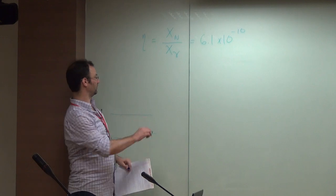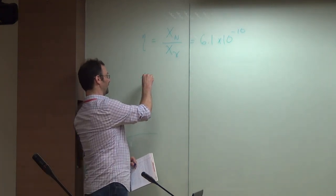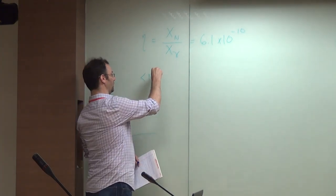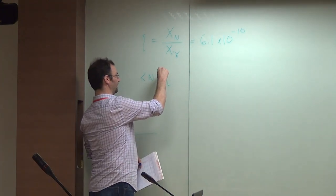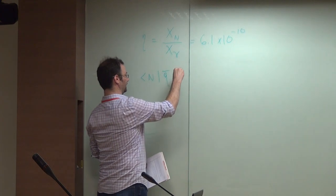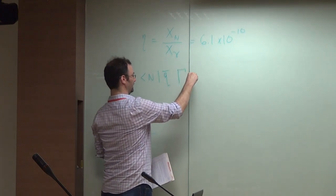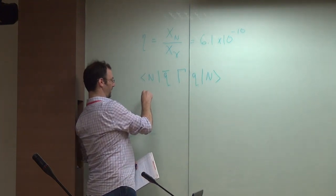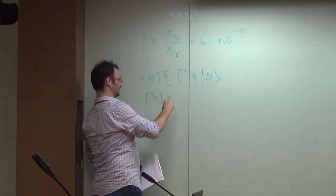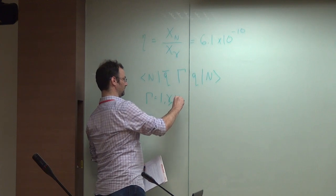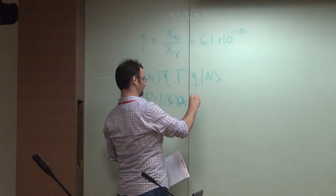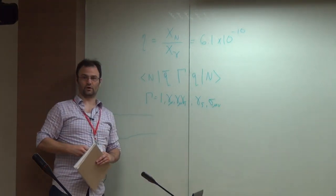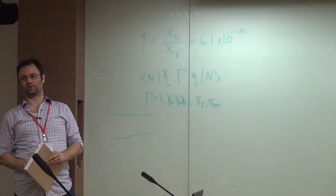Things you want to know: you want to know how to compute matrix elements in a nucleon — N stands for nucleon, in this case a proton or neutron. We need to know how to calculate, as a first approximation, quark matrix elements in the nucleon.